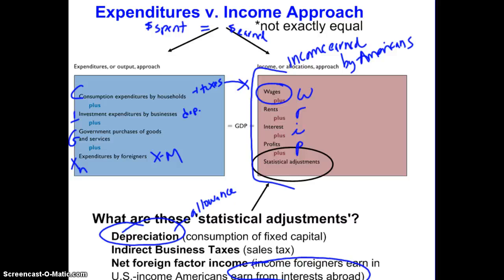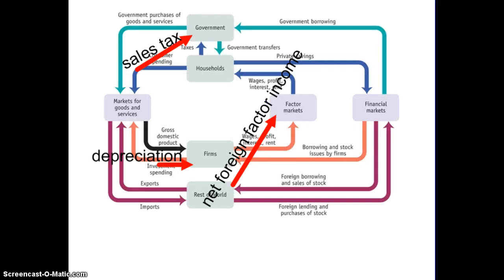If we look at the next slide — which you've seen before — you can see where these discrepancies come out of the circular flow. Depreciation is money being spent but kept by the firm rather than becoming income. Net foreign factor income is income leaving the United States and not becoming income to Americans. And sales tax is money going straight to the government.